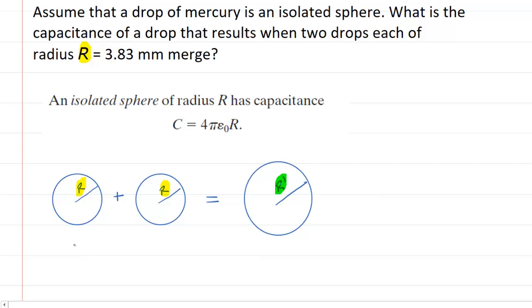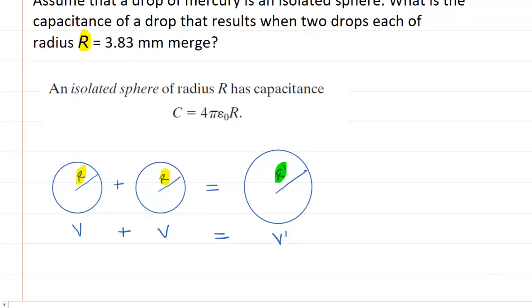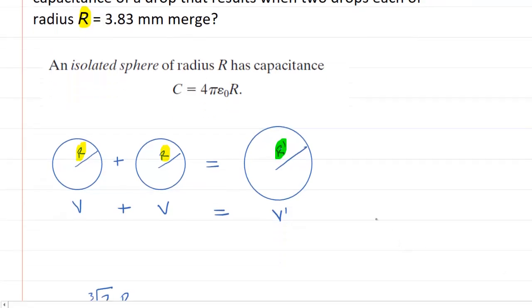The key to the question is to understand that the volume of this drop plus the volume of this drop will have to equal the volume of this new drop. We can call that V prime. In other words, the volumes are additive. We remember that the volume of a sphere is equal to 4/3 times π times the radius of the sphere cubed.